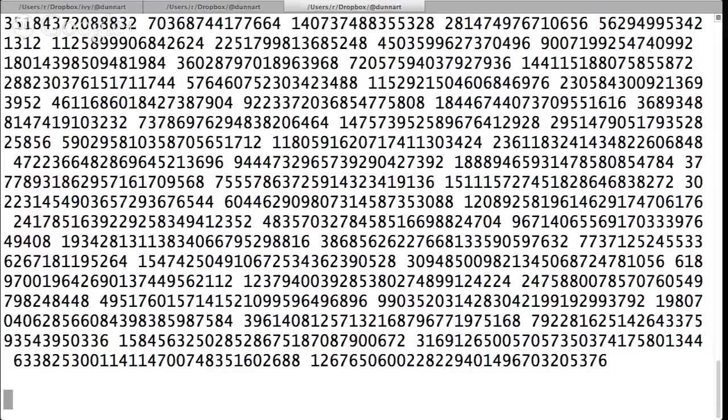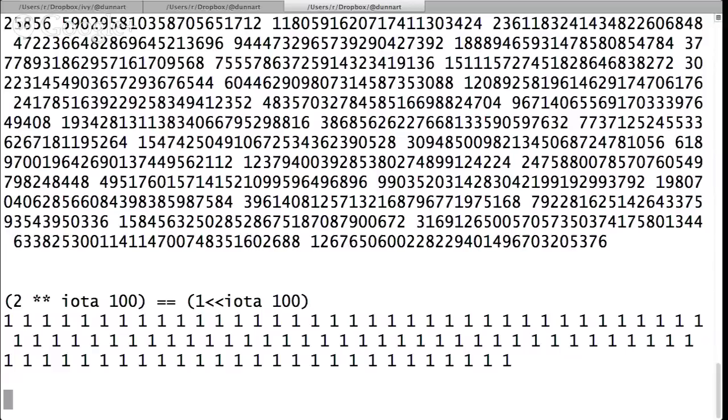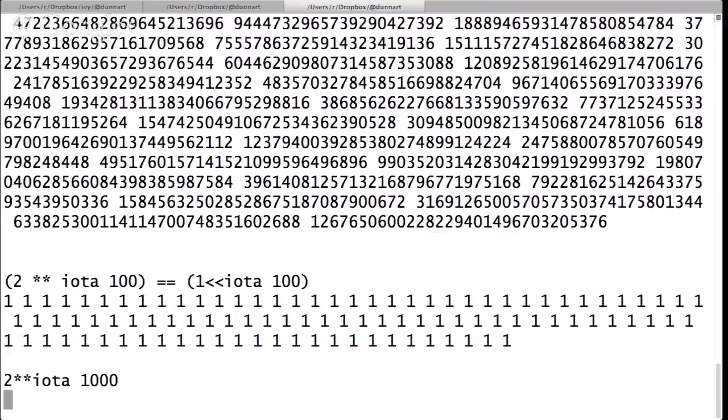That's all iota 10 means. That's, if I scroll, I think I overdid it here. Two carriage returns. There's two to the power of iota 100. So there's the first 100 powers of two. They get big fast, right? And then, in fact, I can even do this. Two to the power of iota. Well, you'll notice that two to the iota 100 is the same as one shifted up iota 100. That's good. Here's the first 1,000. I mean, it's actually pretty cool.